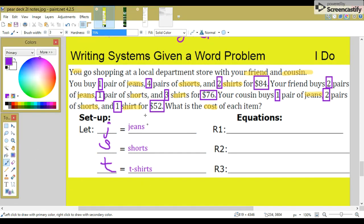Okay, so the first equation is what you are buying. You have one jeans, plus four shorts, plus two t-shirts. And that is equal to $84.